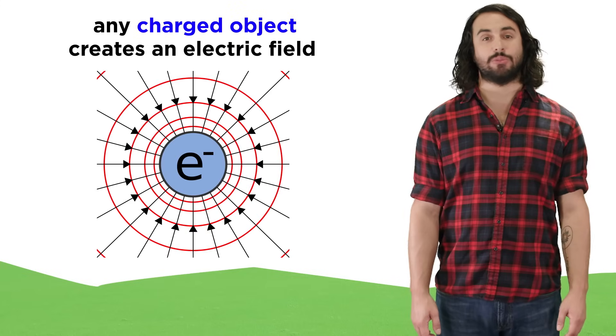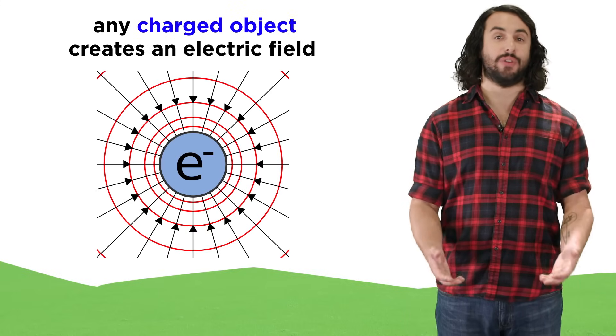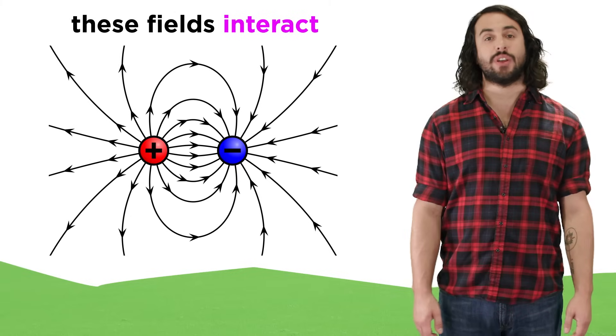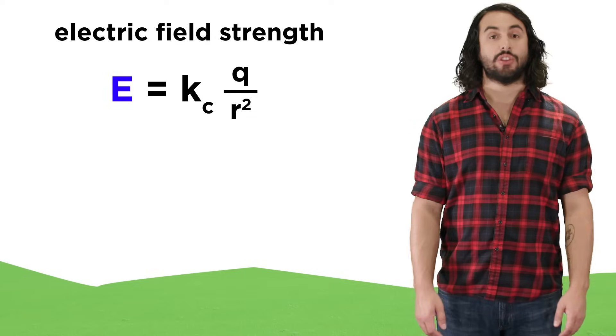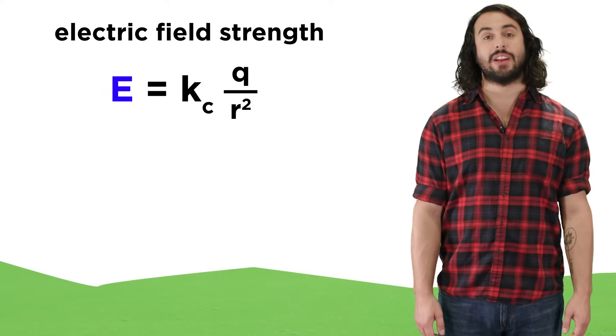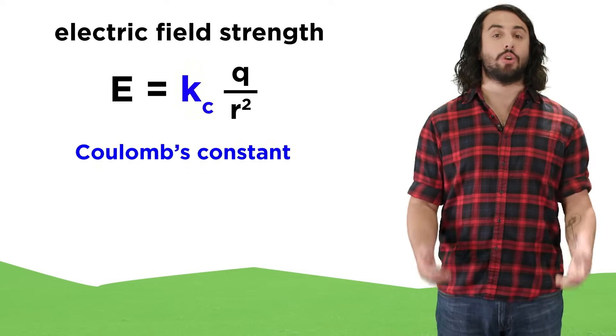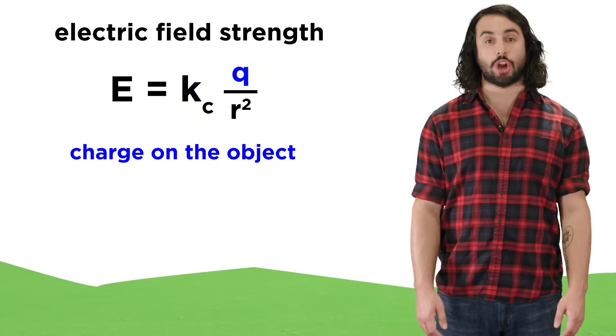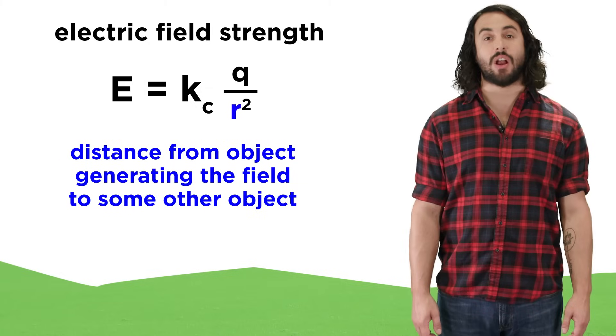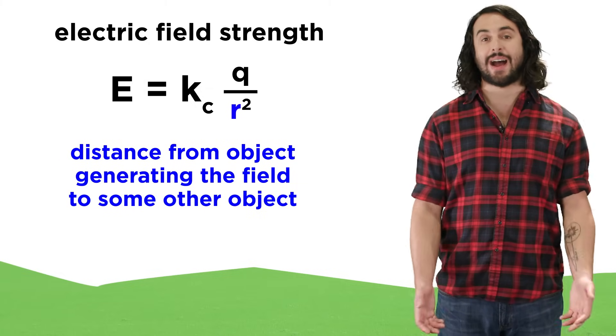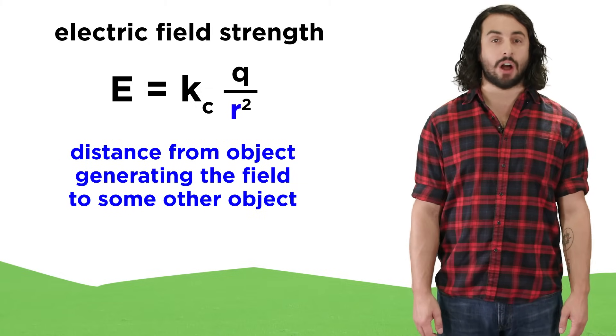Any charged object will manifest an electric field around itself, and if another charged object enters this field, interactions will occur. The strength of an electric field generated by a point charge is equal to the Coulomb constant times the charge on the object producing the field divided by the square of the distance between this object and whatever it is acting on.